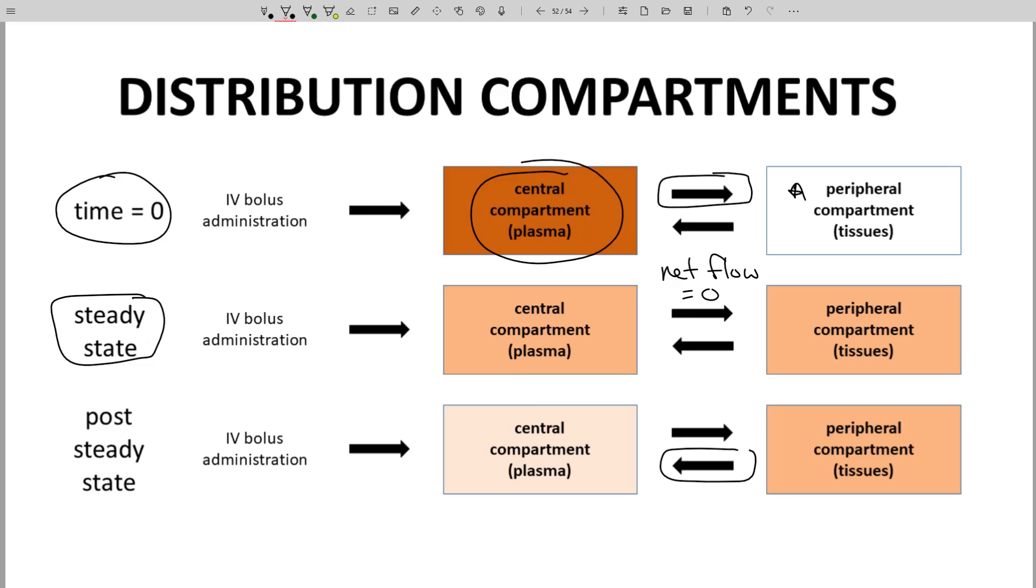It is possible to measure the level of distribution at the steady state concentration through methods that we have not discussed. This type of Vd is called VdSS or just VSS – volume of distribution at steady state.